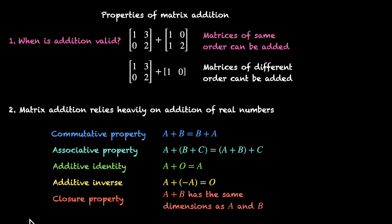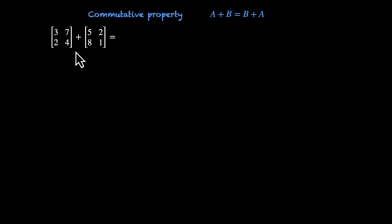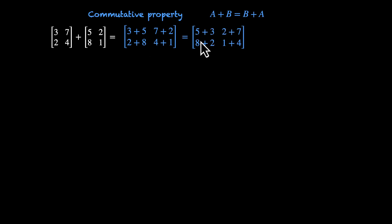Now let's see why these properties work and at exactly which step real numbers come into play. Let's look at the commutative property: A plus B equals B plus A. We have matrix [3, 7, 2, 4] and we add [5, 2, 8, 1] to it. Matrix addition says you add the corresponding elements: 3+5, 7+2, 2+8, 4+1. We're not interested in finding the sum — we want to see where real numbers come into play. Notice 3 and 5 are interacting; this element is 3+5, and we can rearrange this as 5+3.